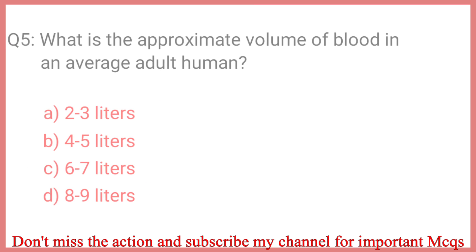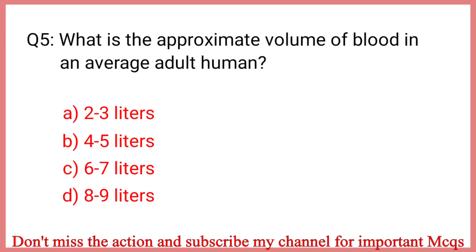Question number 5. What is the approximate volume of blood in an average adult human? The correct answer is Option B: 4 to 5 liters.